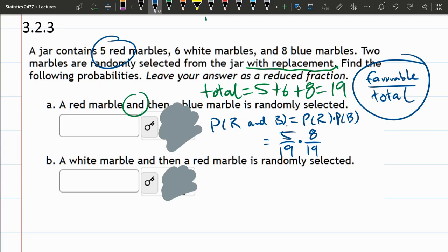So that's part A. Part B: we have a white and then a red. So on this one, probability of white and red - similar, you're going to compute probability of white, multiply by the probability of red. Really similar to the last one, just slightly different numbers.